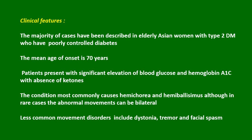Clinical features. The majority of cases have been described in elderly Asian women with type 2 diabetes mellitus who have poorly controlled diabetes. The mean age of onset is 70 years. Patients present with significant elevation of blood glucose and hemoglobin A1c with absence of ketones.